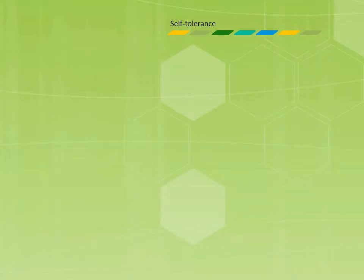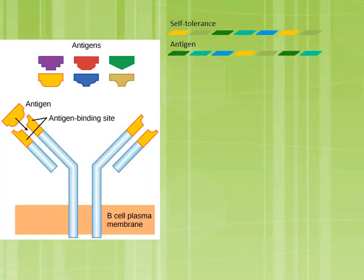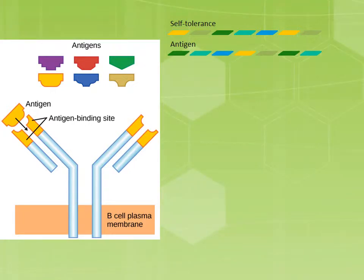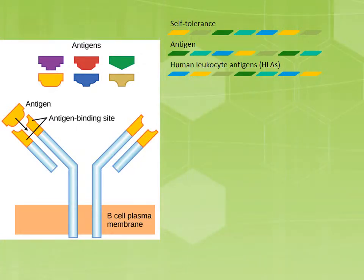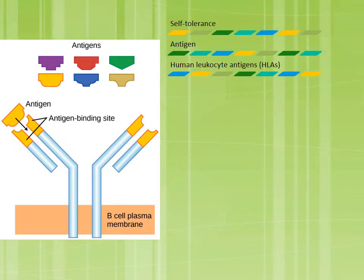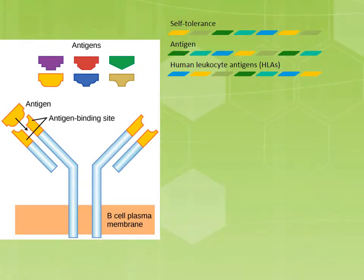Self-tolerance is the body's immune system capability of recognizing one's own cells. Each cell has a marker or protein, also known as an antigen, that signifies the type of cell. Human leukocyte antigens are unique proteins found on the surface of all body cells of a single individual and serve the person as a cellular fingerprint.